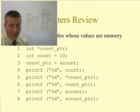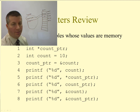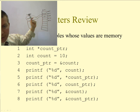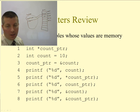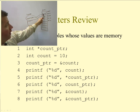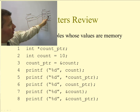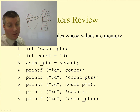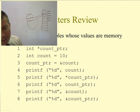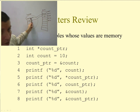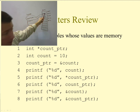On line 4 it prints out the value of count — we go to that location and it prints out 10. On line 5 it prints out the dereference value of count pointer: we go to count pointer's location, grab that address, go to that address and get the value out — so line 5 also prints 10. Line 6, we print out the value of count pointer — we follow that arrow and get 8008.